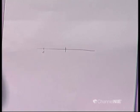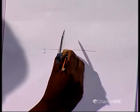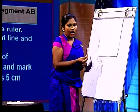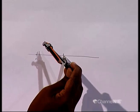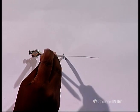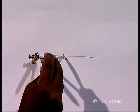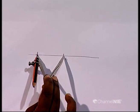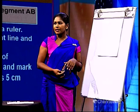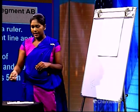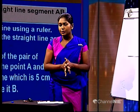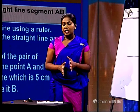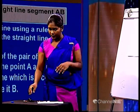Mark this intersection point as B. Complete the construction — the straight line segment AB is now constructed. So now we have to construct an equilateral triangle. First of all, we will construct an equilateral triangle.